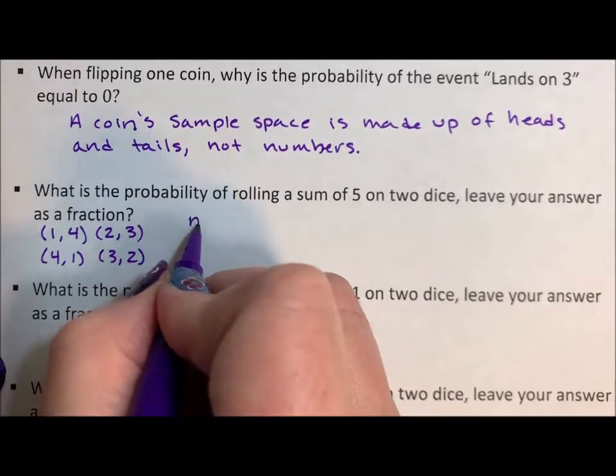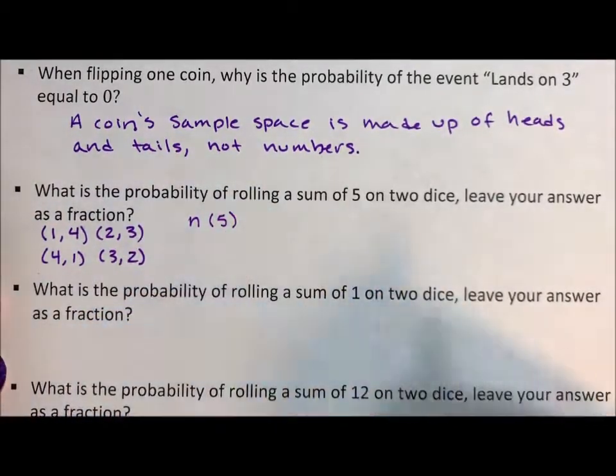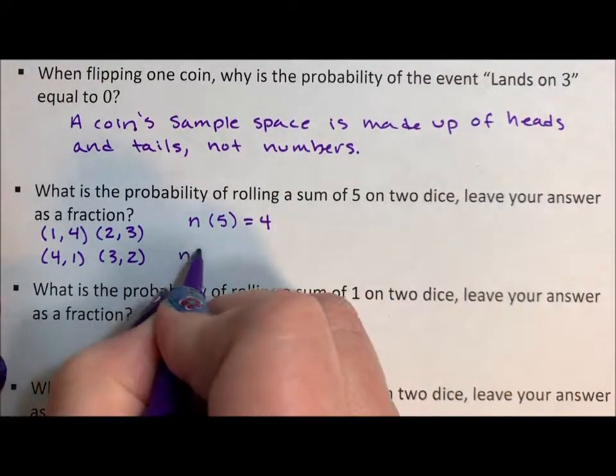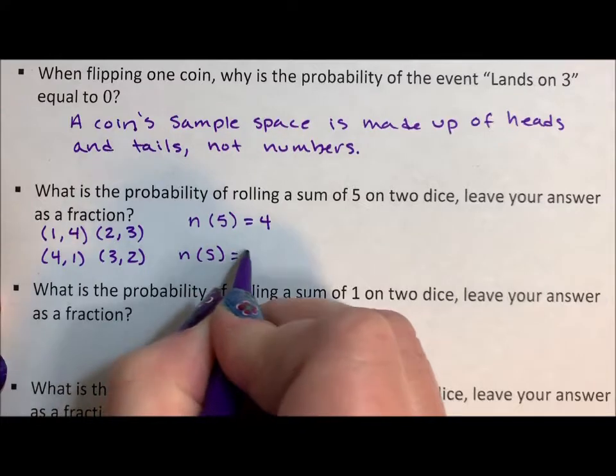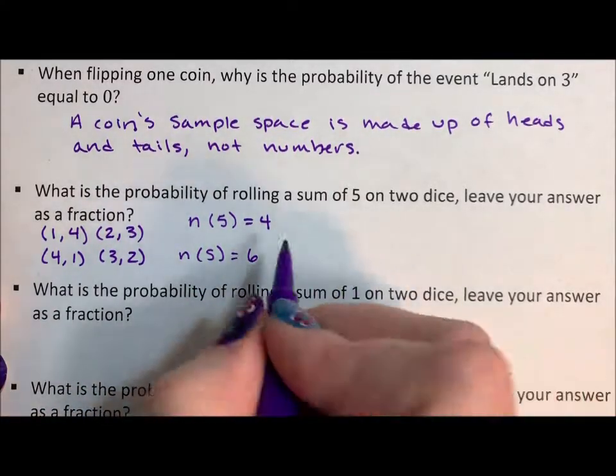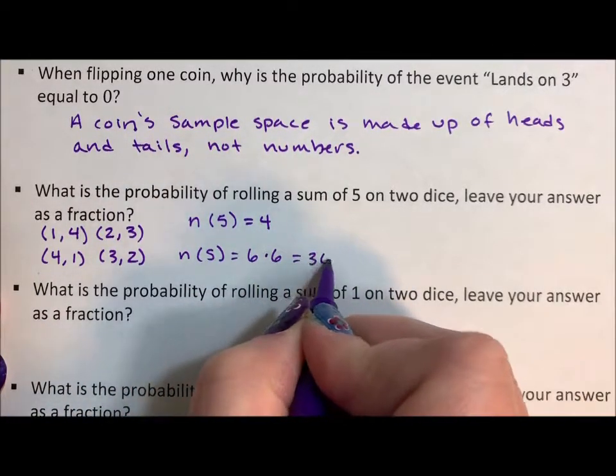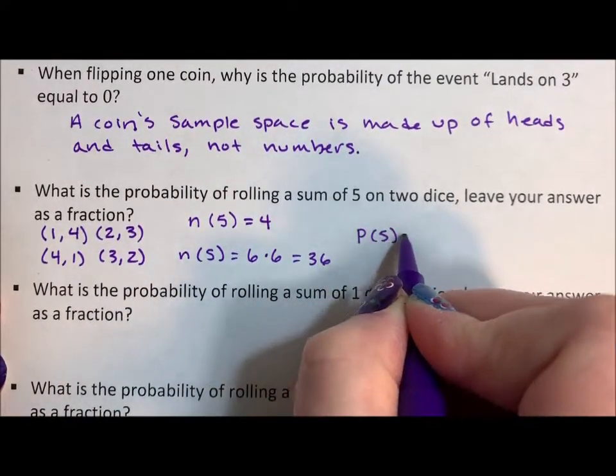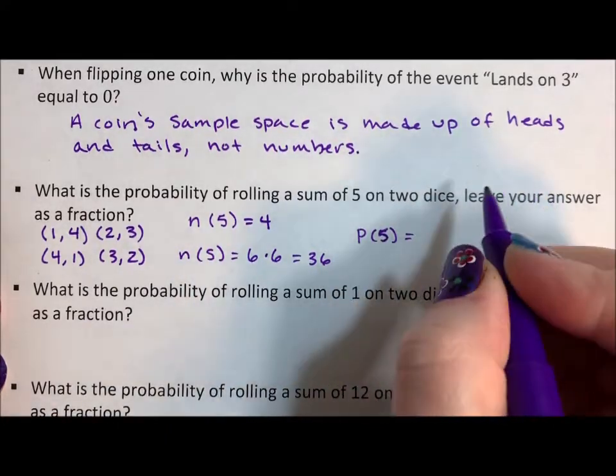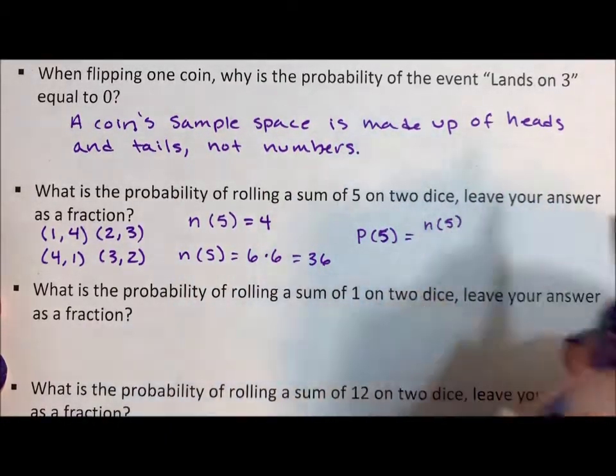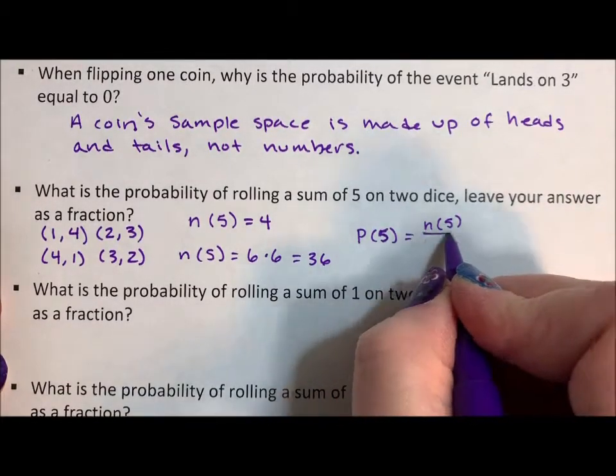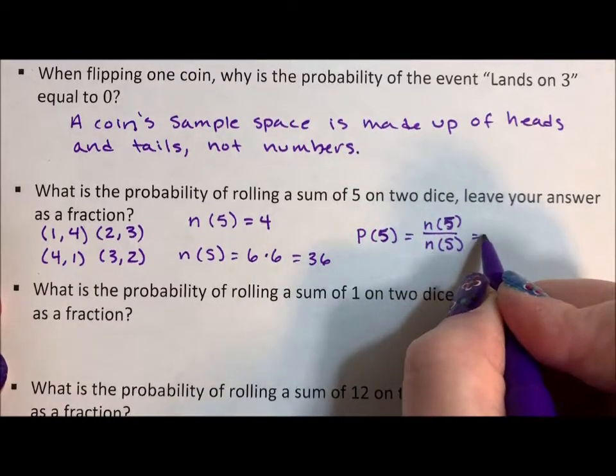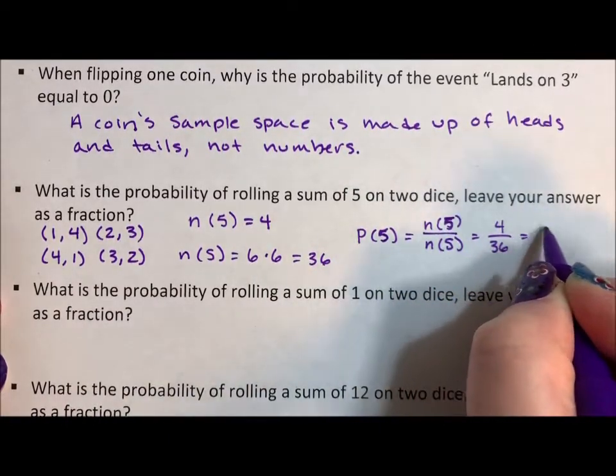So the number of elements that lead to a sum of five on two dice is four. Now the number of elements in the sample space, we have six outcomes for the first die and six for the second, that's 36 total. The probability of rolling a five is the number of elements that lead to the sum of five over the number of elements in the sample space, which is 4 over 36, which reduces to 1 over 9.